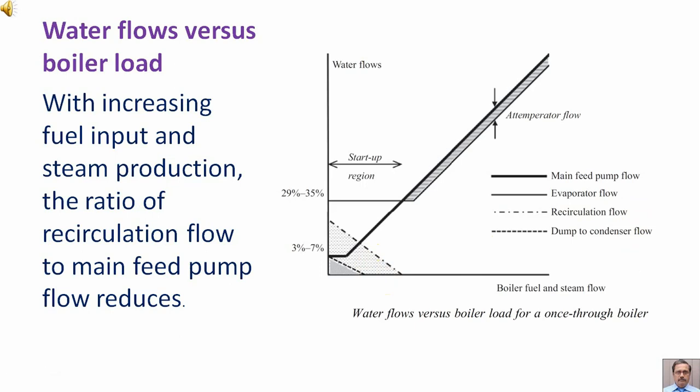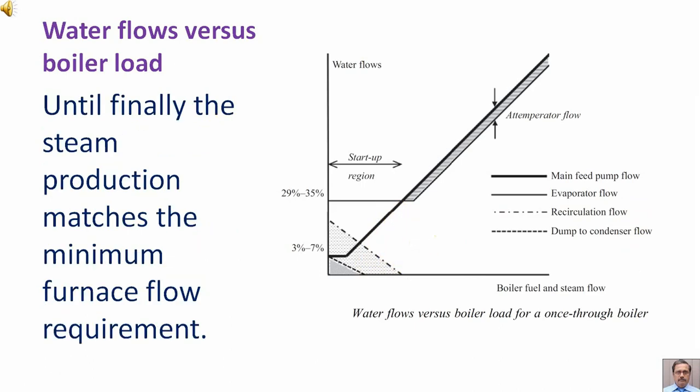With increasing fuel input and steam production, the ratio of recirculation flow to main feed pump flow reduces, until finally the steam production matches the minimum furnace flow requirement.